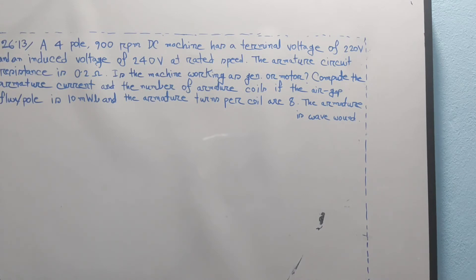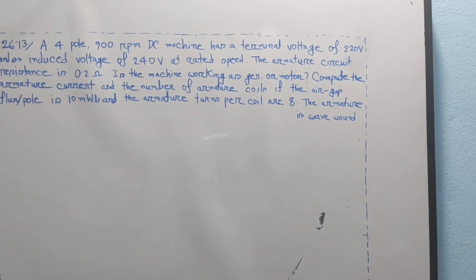The machine could be a DC series generator or a separately excited generator. Using the armature circuit equation: Eg = Vt + Ia × Ra, so armature current Ia equals (Eg − Vt) divided by Ra, which is (240 − 220) divided by 0.2, giving Ia = 100A.